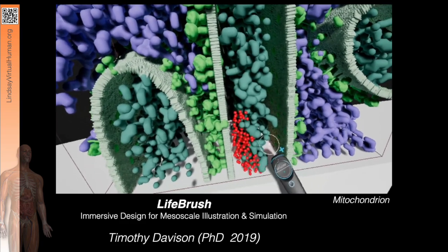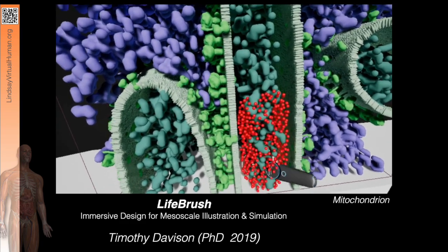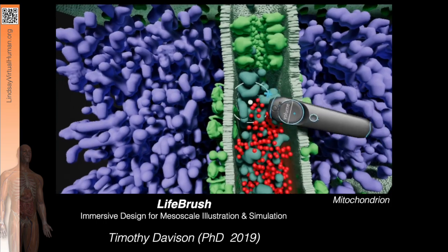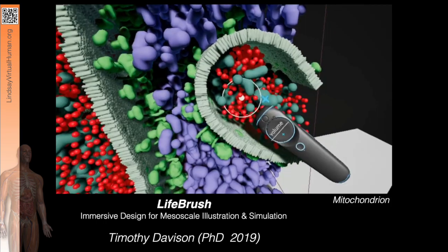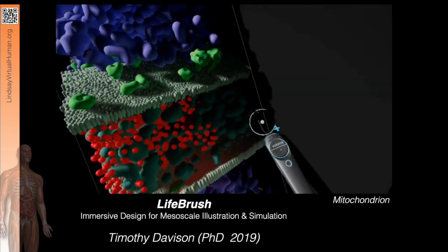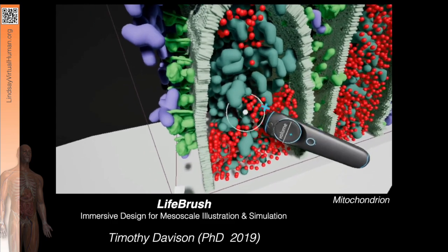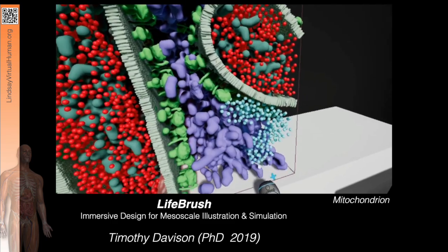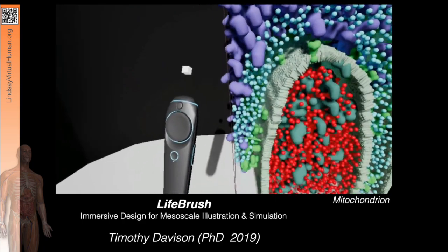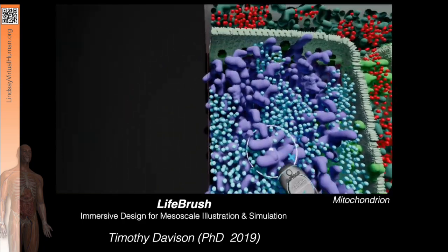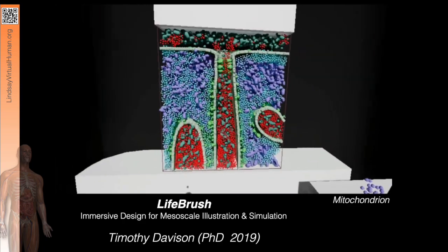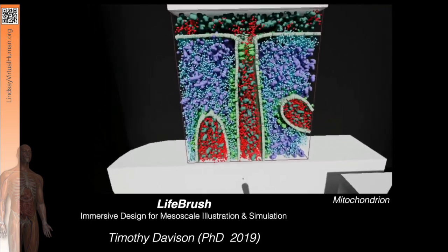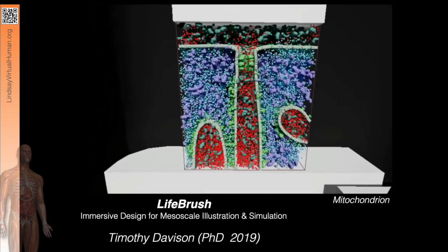These red spheres represent hydrogen or protons, and they actually represent many, many, many protons. We paint them into the cristae region, where the proton gradient drives ATP synthase. Here we're adding ADP for ATP synthase to convert into ATP. And now we can start our simulation.